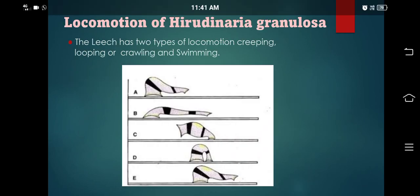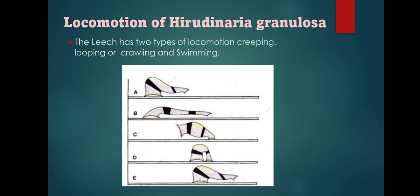Hirudinaria granulosa has two types of locomotion: looping or crawling, and swimming. The diagram shows the stages of locomotion.